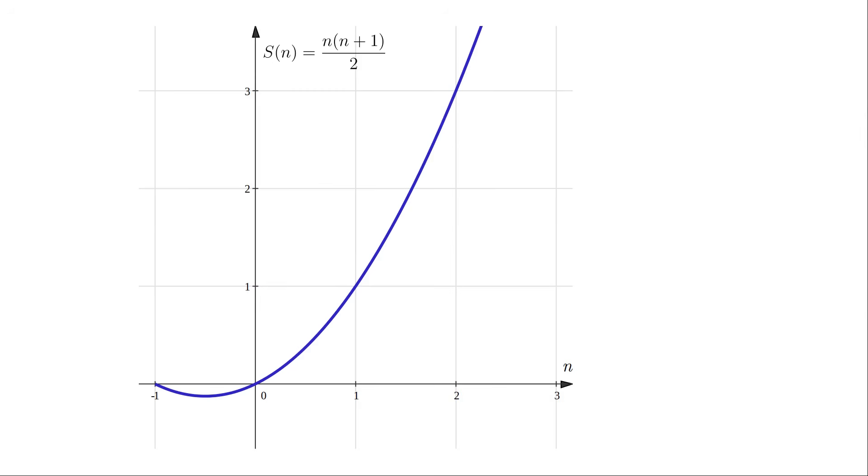The area under the axis here, that is the integral between n equals minus 1 and 0, is, drumroll please, negative 1 twelfth. But what does this mean?